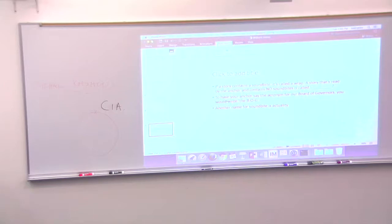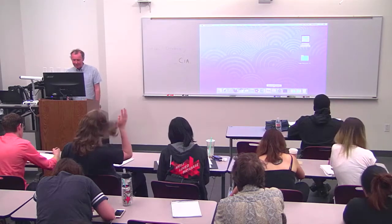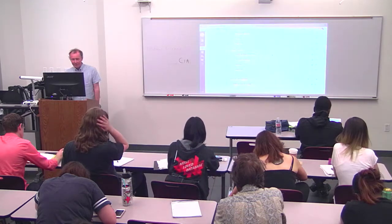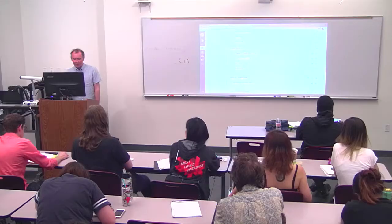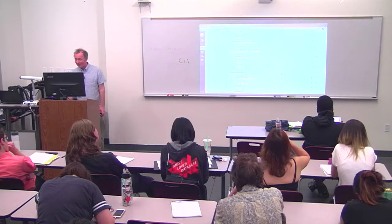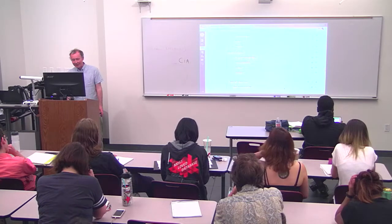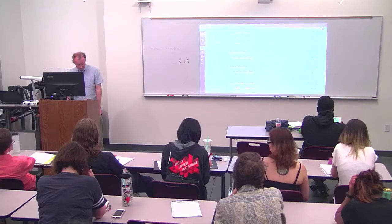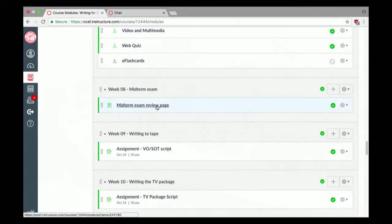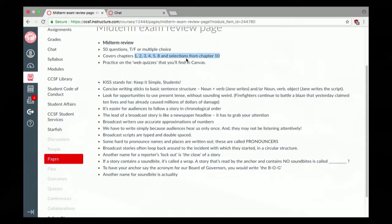That's the end of the slideshow. Combined with doing the web quizzes for the various chapters, that should help. There was a question about whether the circular structure is like a diamond — yes, I prefer the diamond, but in the textbook they say 'circle,' so let's follow the textbook since you're studying out of that. So: midterm is coming up. Chapters 1, 2, 3, 4, 5, 8, and selections from 10. Practice those quizzes — they're helpful.